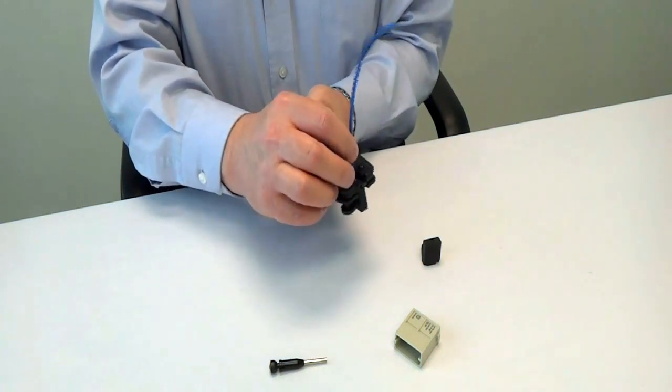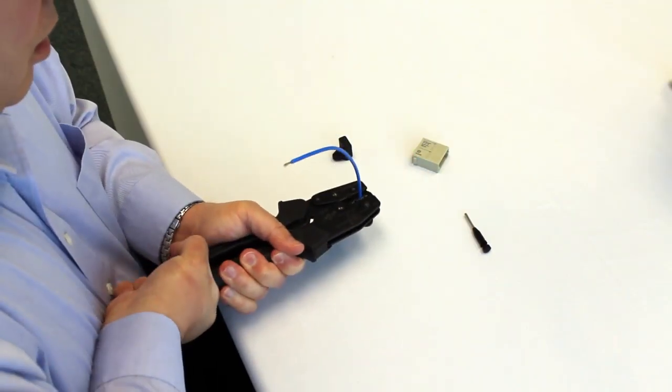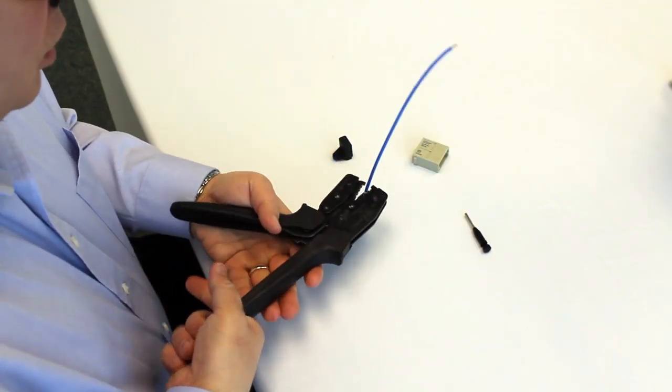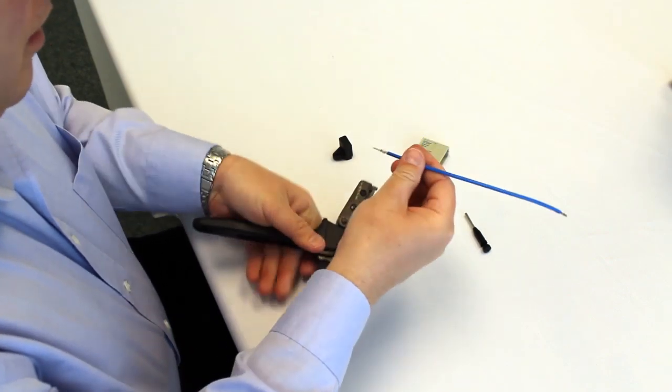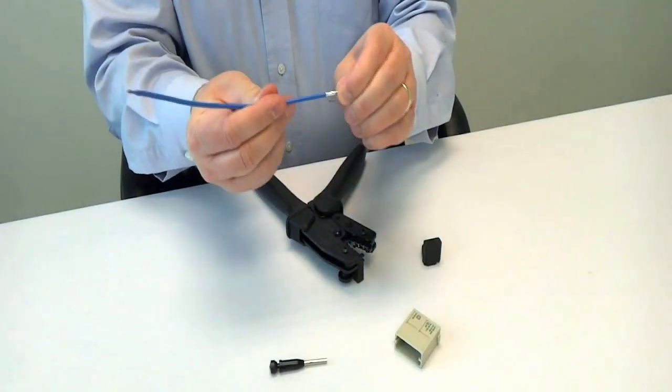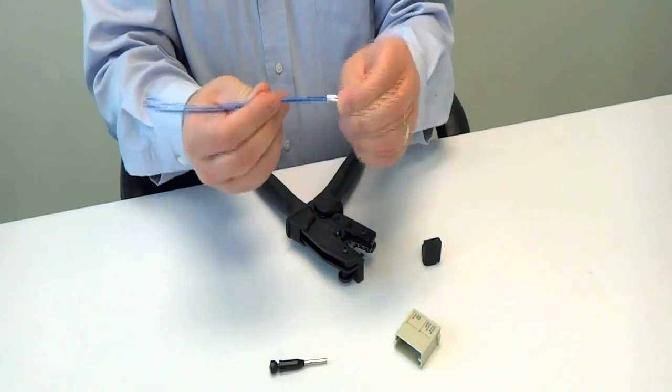Once you insert the wire, you complete and close the tool completely because it won't open again unless it's completely closed and you've made a correct crimp to the contact and the wire.